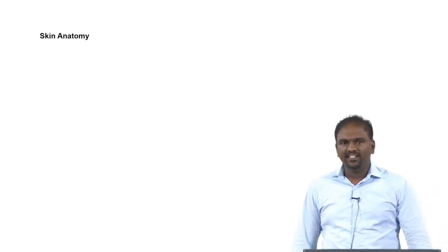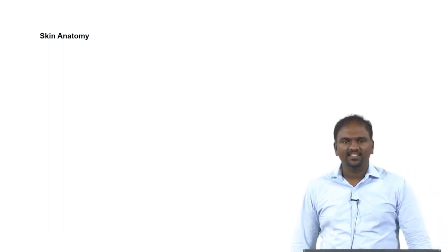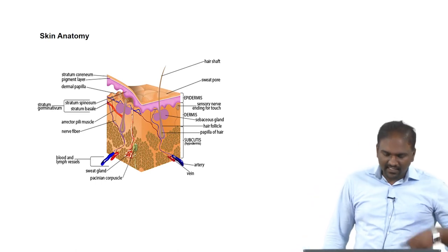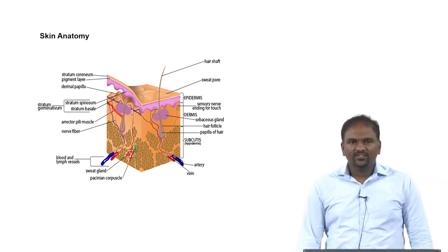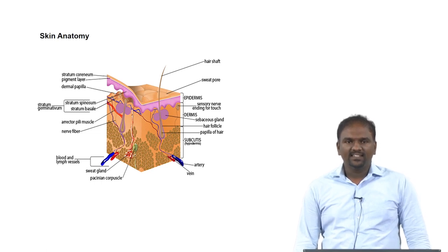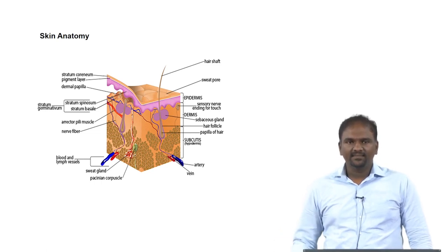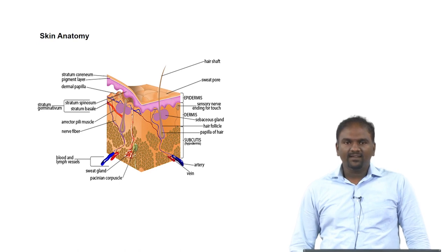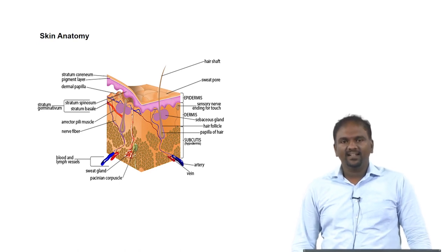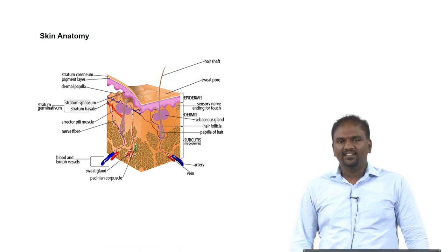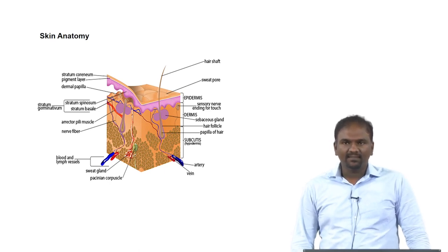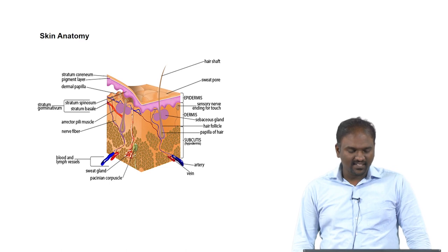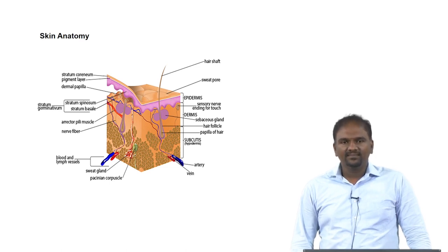Before developing any skin graft, we need to know about the anatomy of the skin. The skin has two layers: the first layer is dermis and the top layer is epidermis. The bottom layer is not part of the skin but also plays a role when we discuss about the skin — that bottom layer is subcutaneous tissue, also called hypodermis.